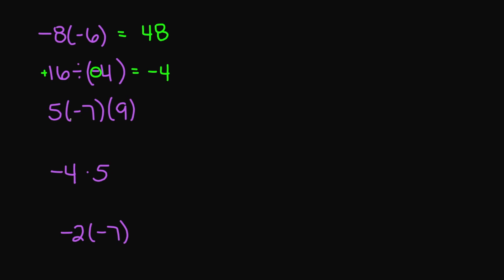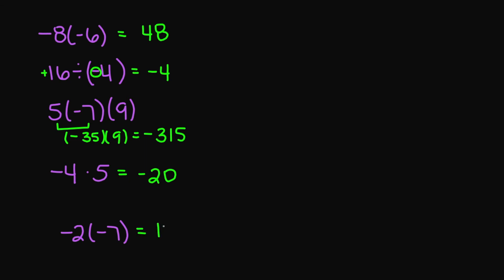Let's look at 5 times negative 7 times 9. So 5 times negative 7 is going to be negative 35. Then negative 35 times 9 is going to equal negative 315. Next: negative 4 times 5 equals negative 20. And then negative 2 times negative 7 equals a positive 14.